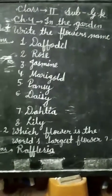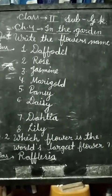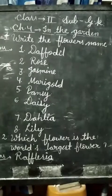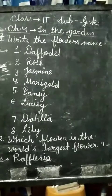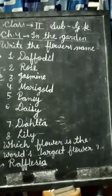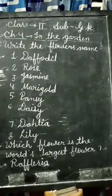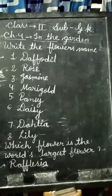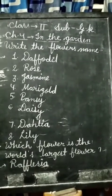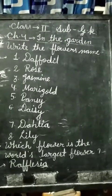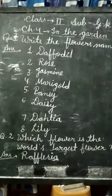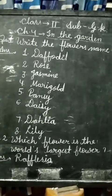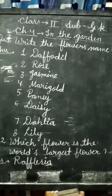First number is D-A-F-O-D-I-L, Daffodil. Second number is R-O-S-E, Rose. Third number is J-A-S-M-I-N-E, Jasmine. Fourth number is M-A-R-I-G-O-L-D, Marigold. Fifth number is P-A-N-S-Y, Pansy.